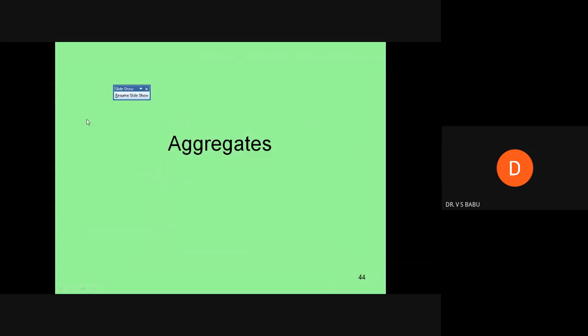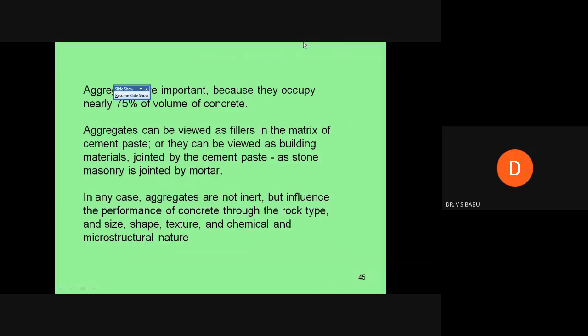Now I will go to the aggregate chapter. In this topic, we'll cover both fine aggregate and coarse aggregate. The aggregates occupy around 70 to 80 percent of the volume of the concrete. If you take a concrete cube, around 80 percent of the material is filled with aggregate.